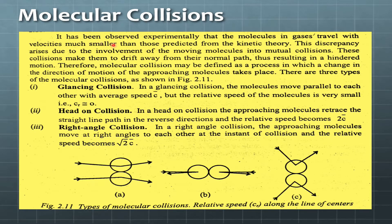It has been observed experimentally that the molecules in gases travel with velocities much smaller than those predicted from the kinetic theory. In kinetic theory the molecular velocity was predicted, but it was assumed that there is no existence of other molecules. But as other molecules are present and they are affecting each other, they do affect the velocities.